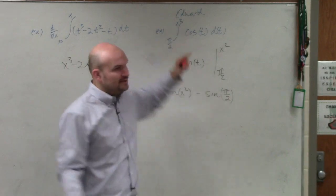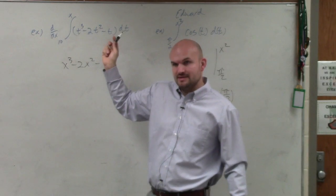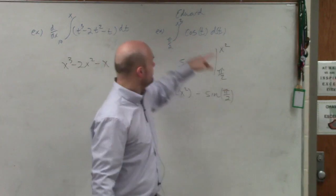However, when the upper bound, notice how all the upper bound was x for all those, right? Now when the upper bound is x squared,